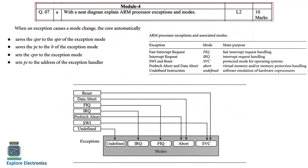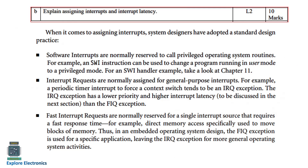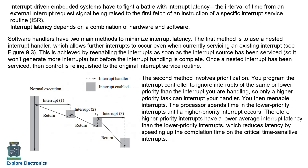The next question is: explain assigning interrupts and interrupt latency. For assigning interrupts, the system designer must adopt standard design practices — three key points are given. Interrupt latency depends on both hardware and software; software handler methods and prioritization are important. An example with three interrupts is shown — before completion of the first interrupt, the next interrupt is handled — and you need to explain how the latency between interrupts is managed.